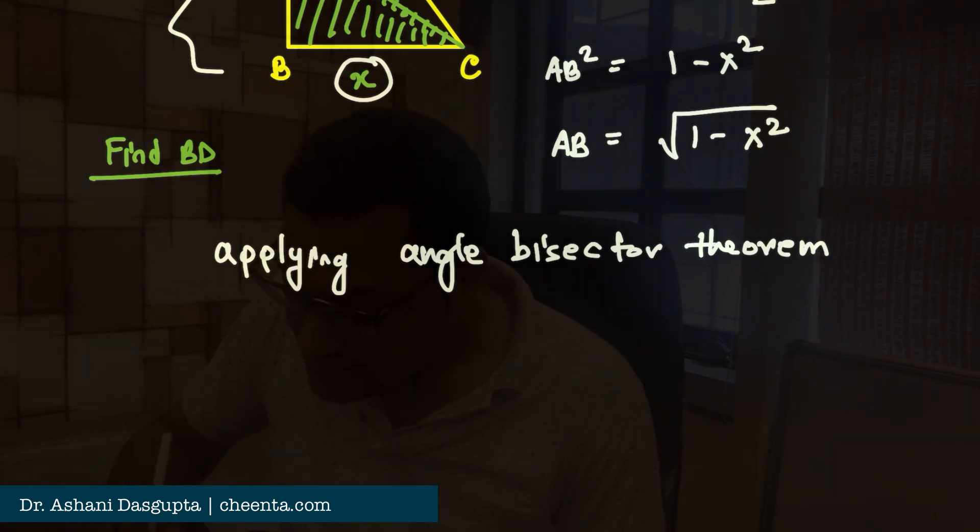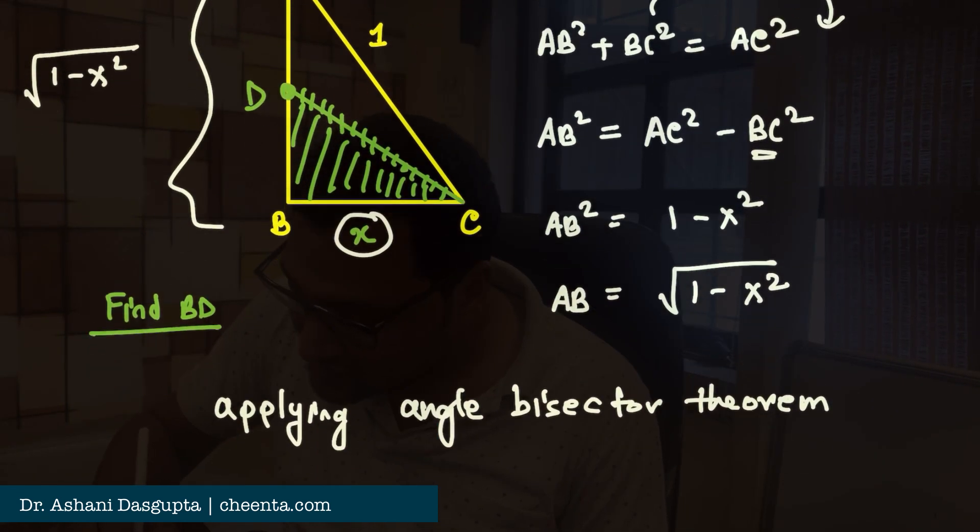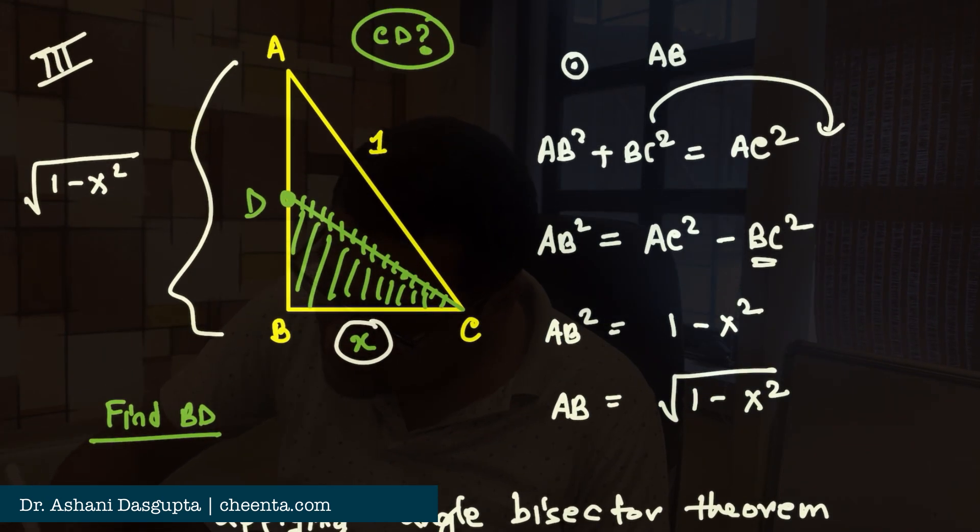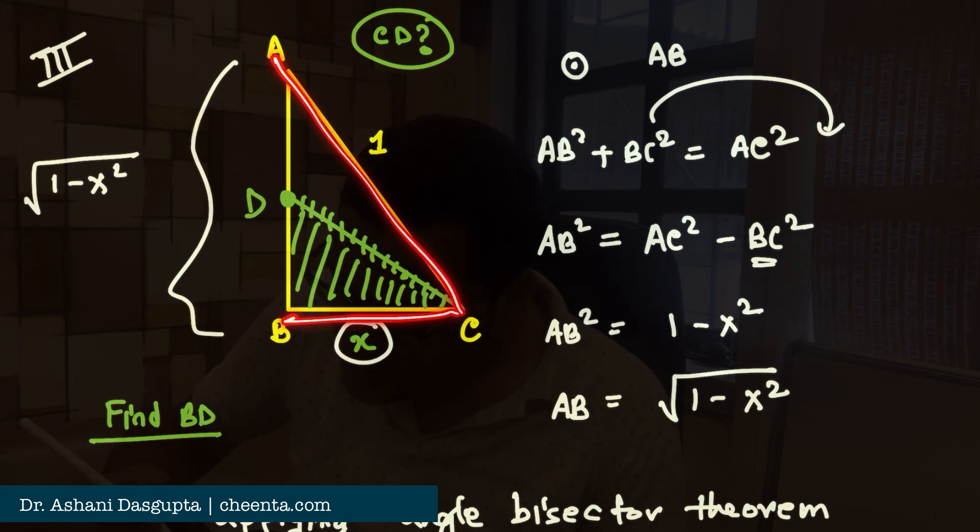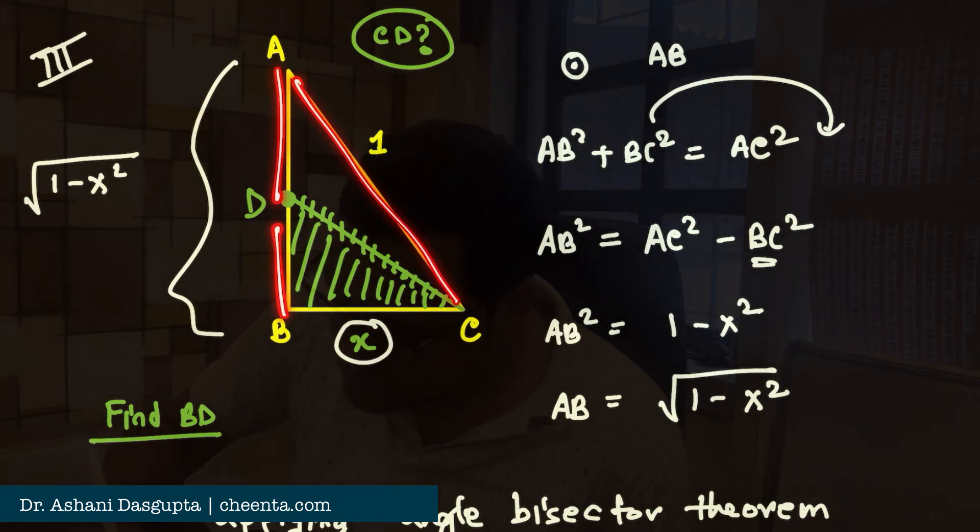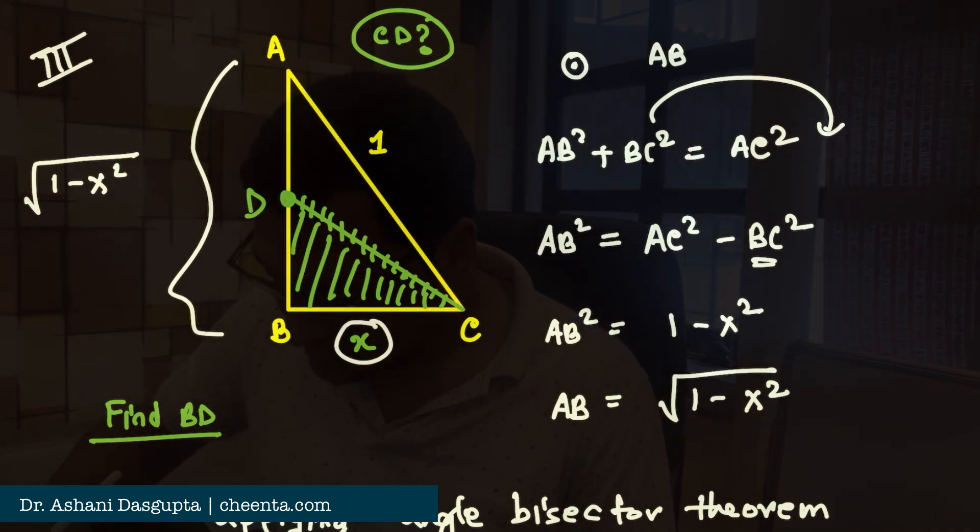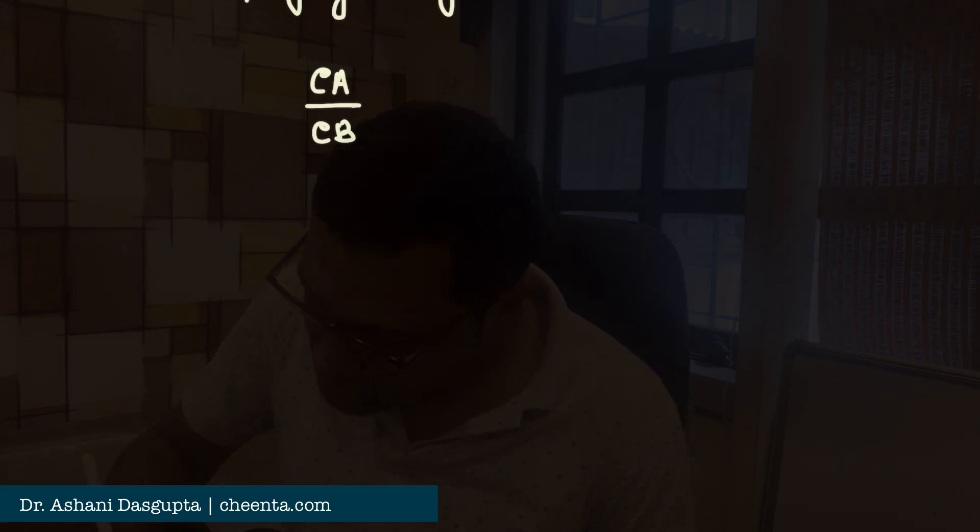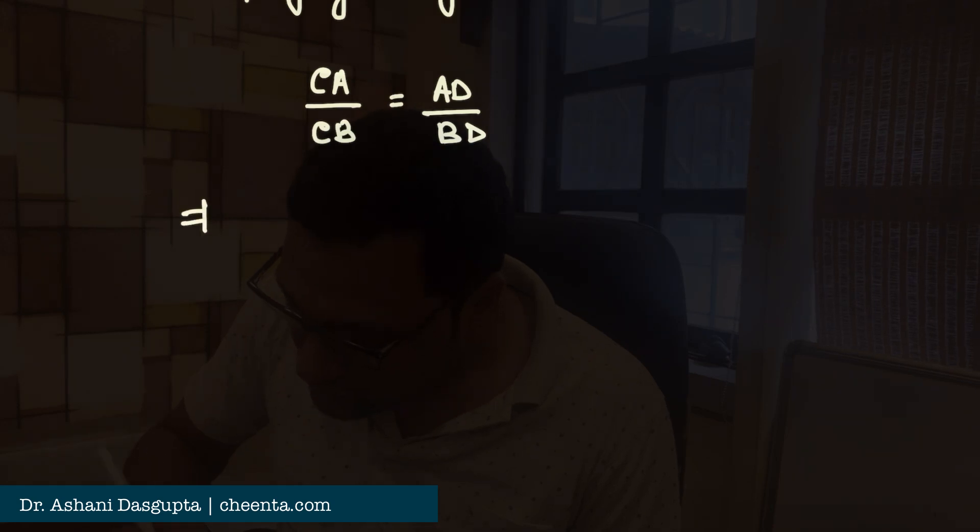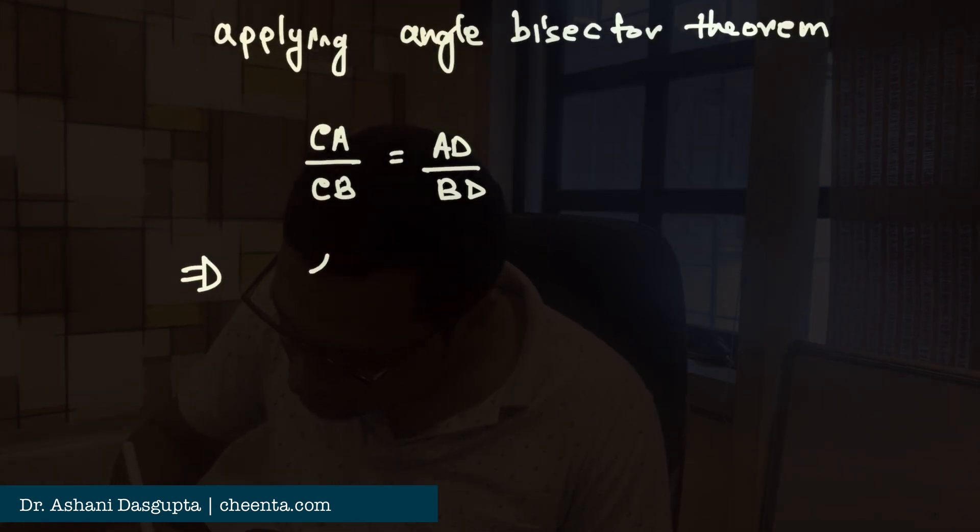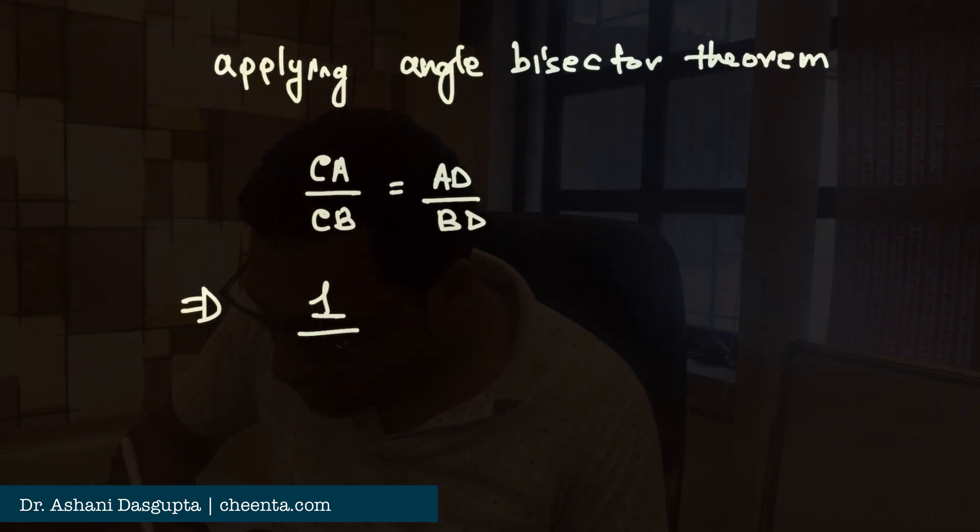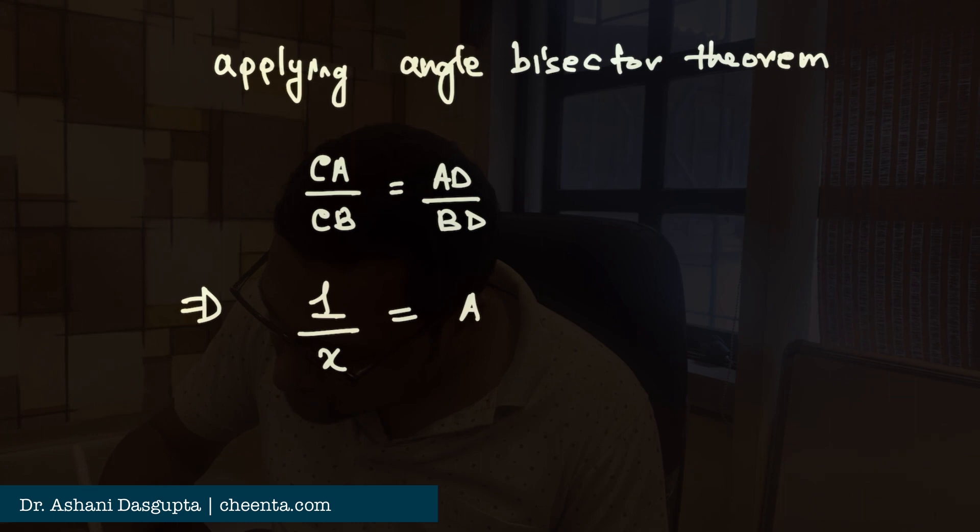We find that CA over CB is equal to AD over BD. CA over CB is equal to AD over BD. So, we already know that CA is 1 and CB is X. So, 1 over X is equal to AD over BD.